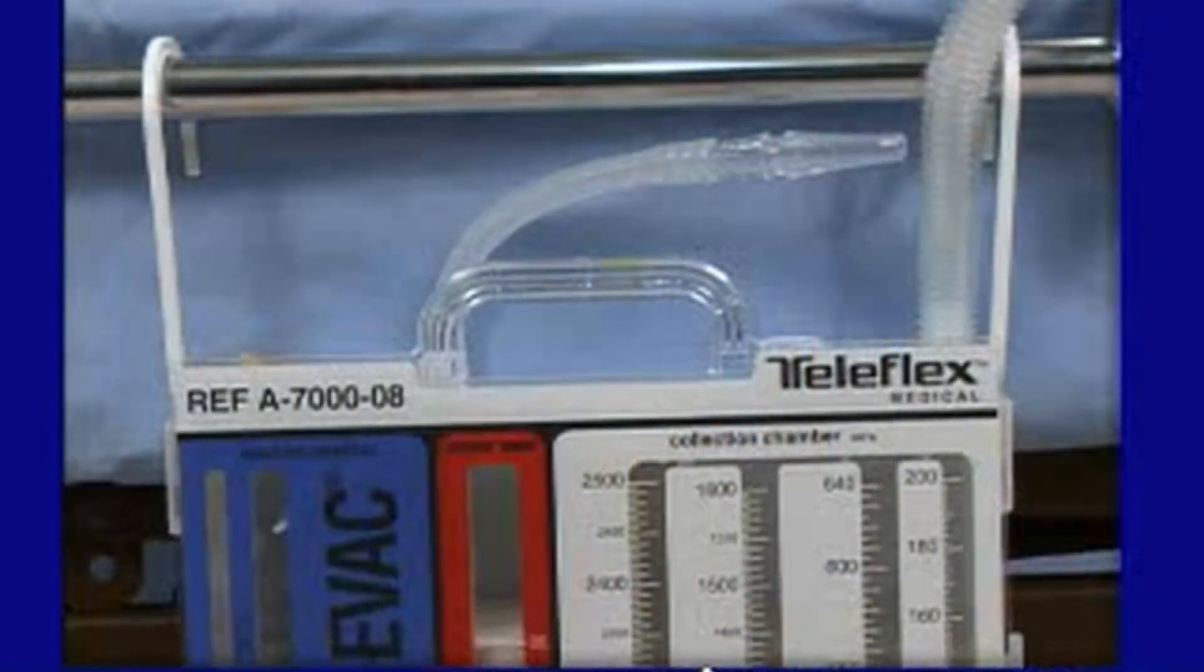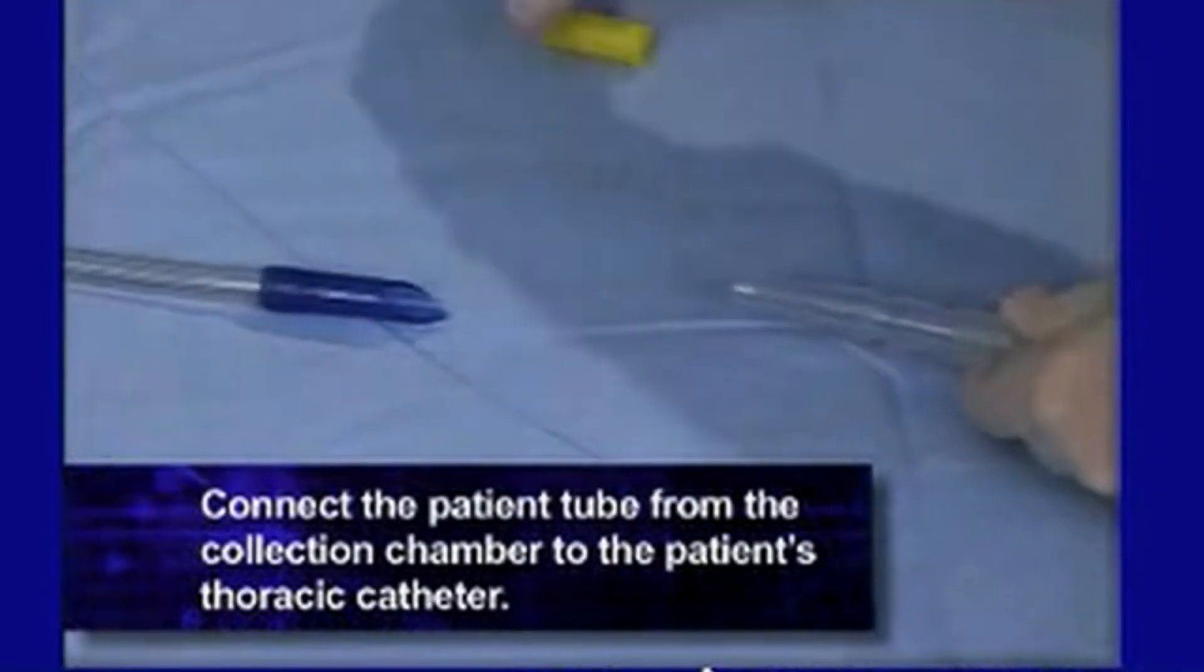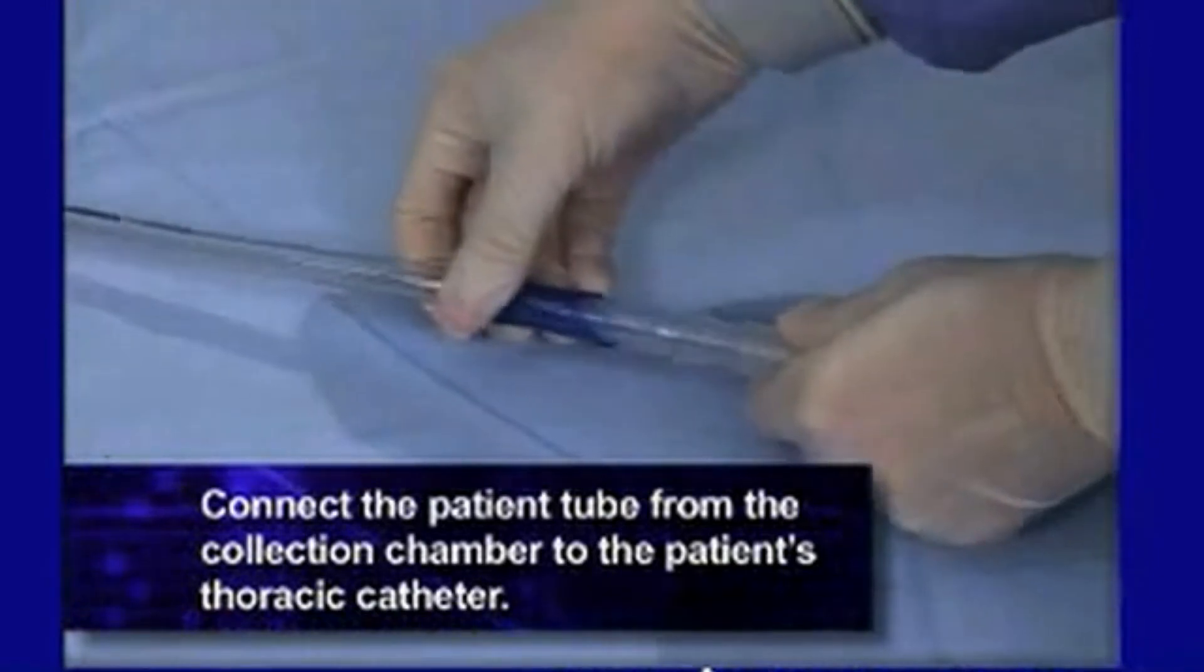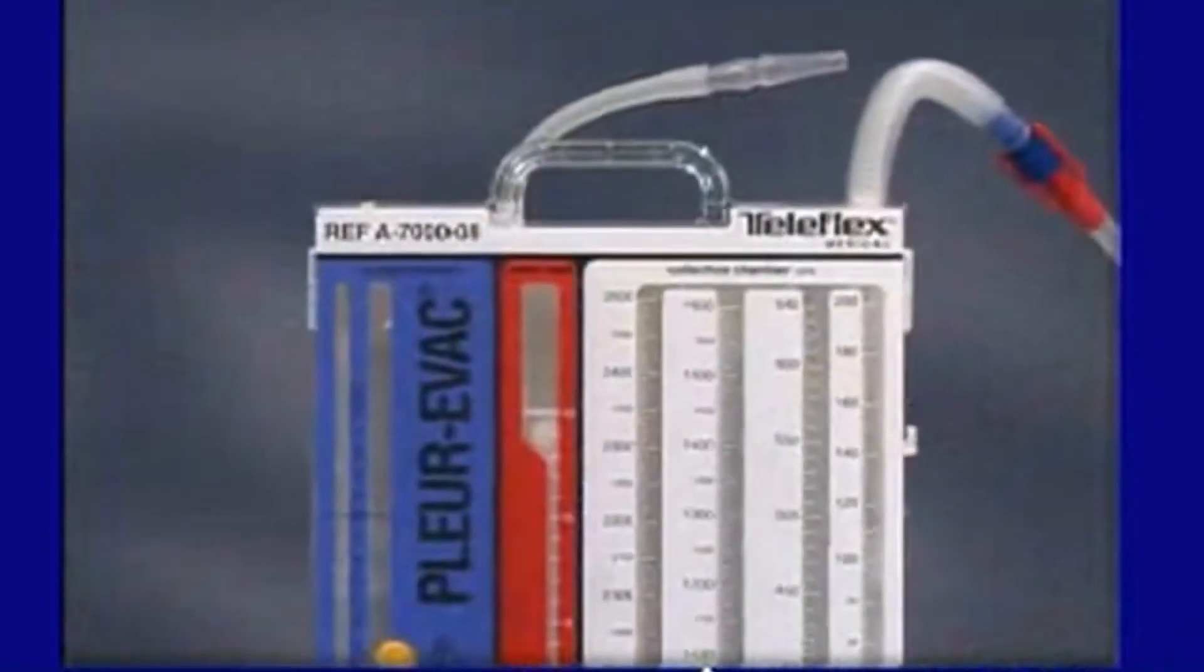When suction is not being used, keeping the suction tube uncapped and unclamped is recommended. This allows air to exit freely from the patient. Using the patient connector attached to the six-foot patient tube, connect the tube from the collection chamber to the patient's thoracic catheter. The patient now has the protection of the water seal.